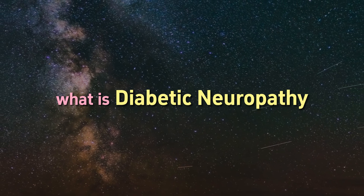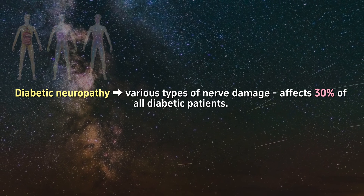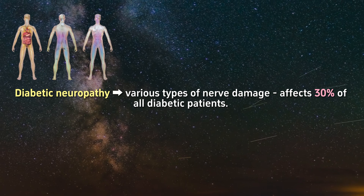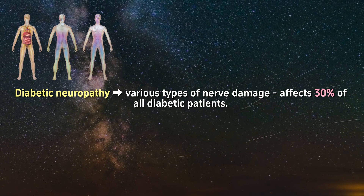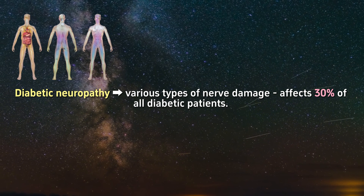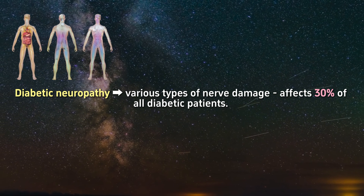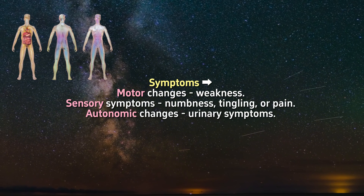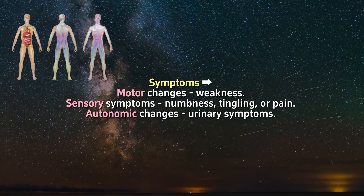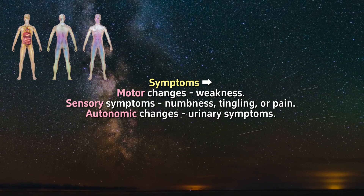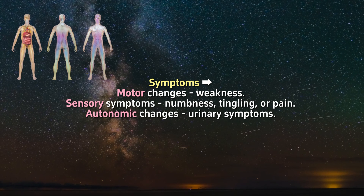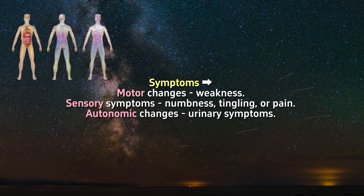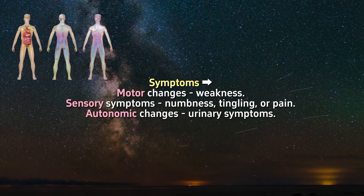What is diabetic neuropathy? Diabetic neuropathy includes various types of nerve damage and affects 30% of all diabetic patients. Symptoms include motor changes such as weakness, sensory symptoms such as numbness, tingling, or pain, and autonomic changes such as urinary symptoms.